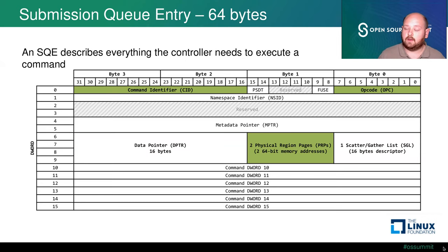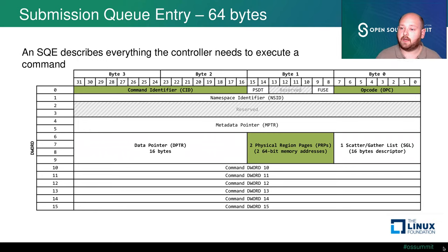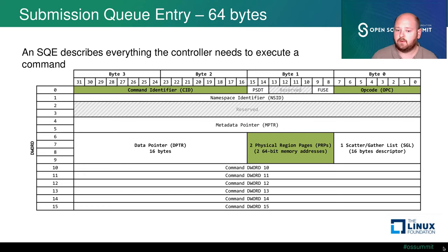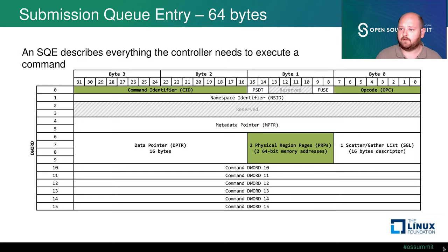The data pointer is 16 bytes and consists of two 64-bit memory addresses — what we call physical region pages — that always point to something of the size of the host operating system's page size.